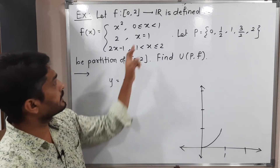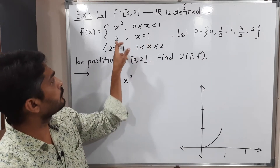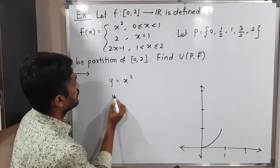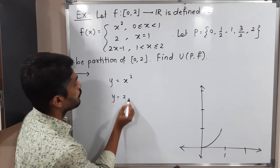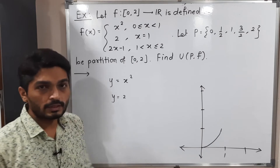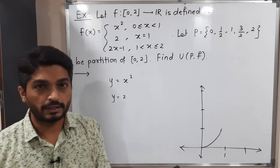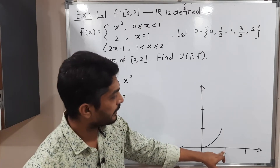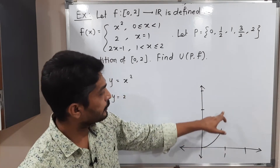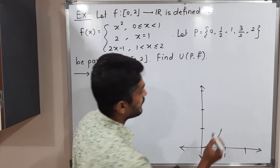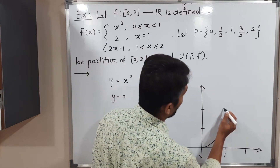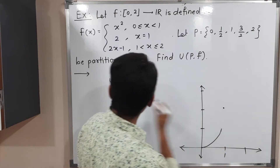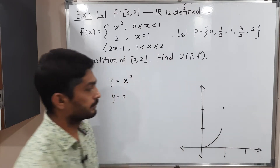At x=1, f(x)=2, so y=2. It is a fixed single point. We get the single point (1, 2), plotted at x=1, y=2.